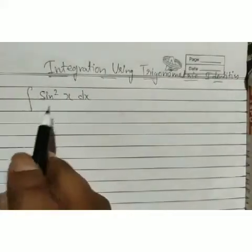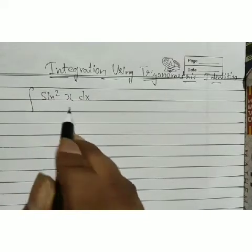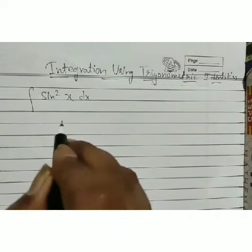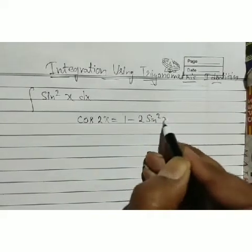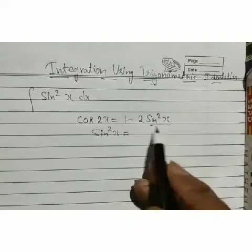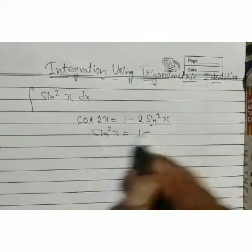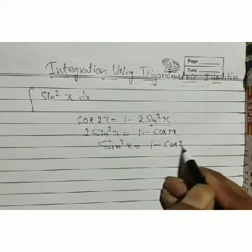Let's look at how we can solve this. To find the integration of sin²x dx, we use the formula: cos 2x = 1 − 2sin²x. To get the value of sin²x, we rearrange: 1 − 2sin²x = 1 − cos 2x, so sin²x = (1 − cos 2x)/2.